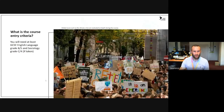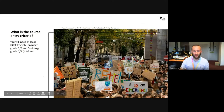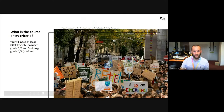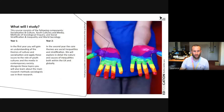In terms of course entry criteria, you need at least GCSE English language at grade B or 5, and sociology at grade C or 4 if you've taken it. This is alongside at least four other GCSEs at grades 5 and above.